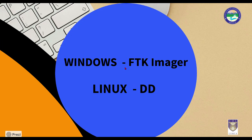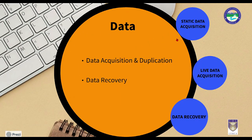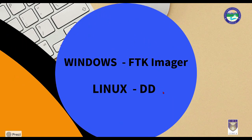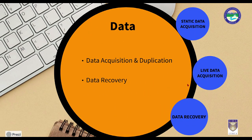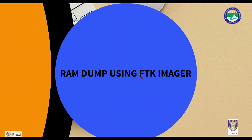You will learn how to capture evidences from a Windows machine using FTK Imager for static data acquisition. Similarly, we are going to do the same with Linux using the tool data duplicator, or DD. For live data acquisition, I will use FTK Imager to create a RAM dump. The RAM dump is basically all the data stored inside your RAM for a limited period of time. Once you switch off your computer, the majority of that data will vanish from the RAM.